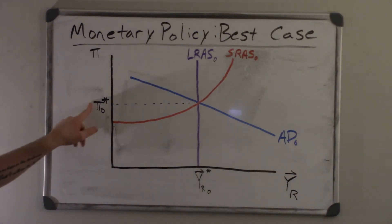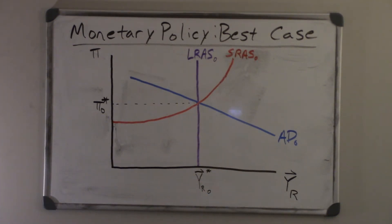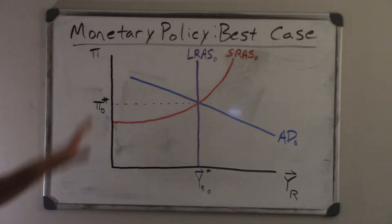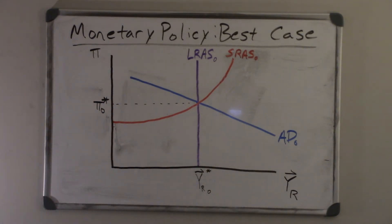We have our equilibrium inflation rate — our long-run equilibrium. We also have our long-run equilibrium real growth rate, also known as the Solow growth rate. You probably want to write down some of the things being said, not just copying down the graph, because without writing anything else down, you might not have context when you go back.